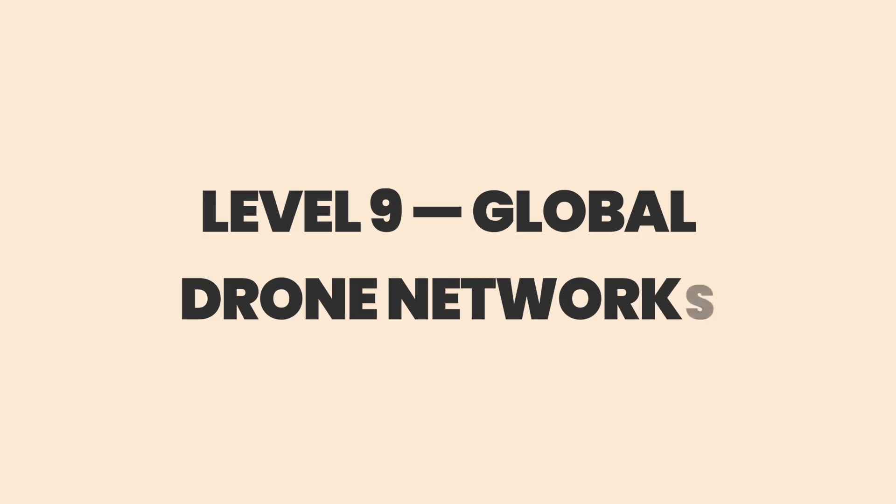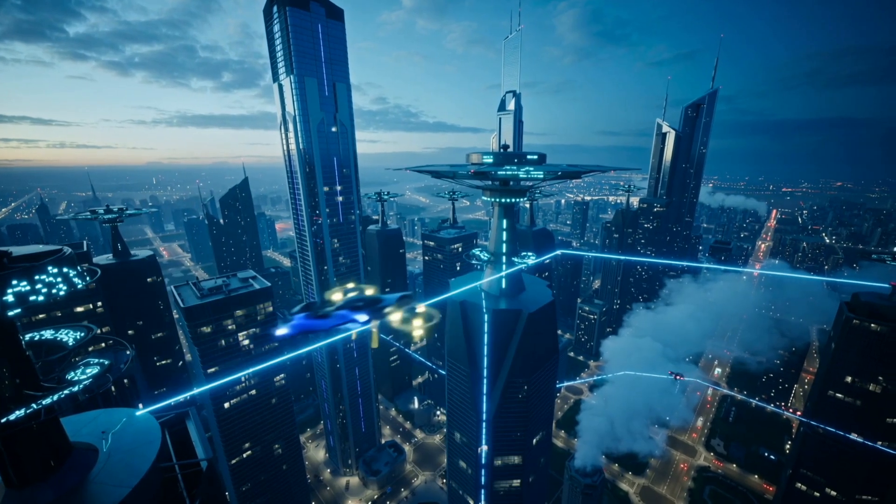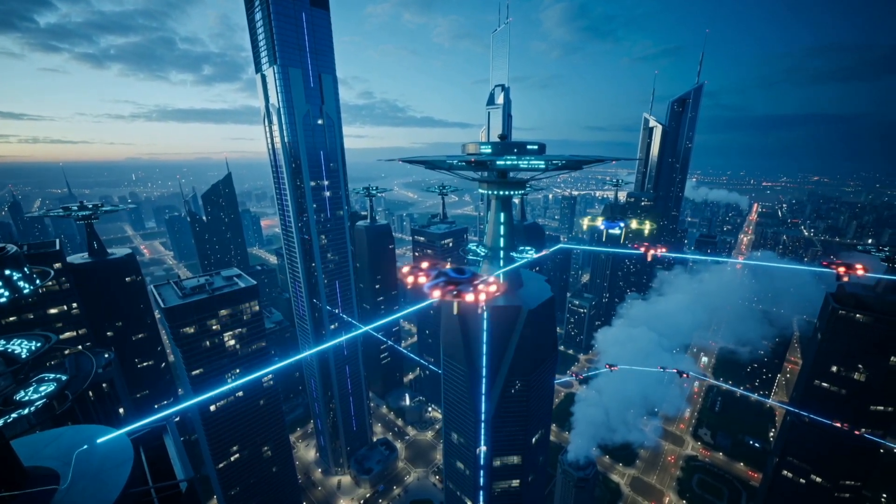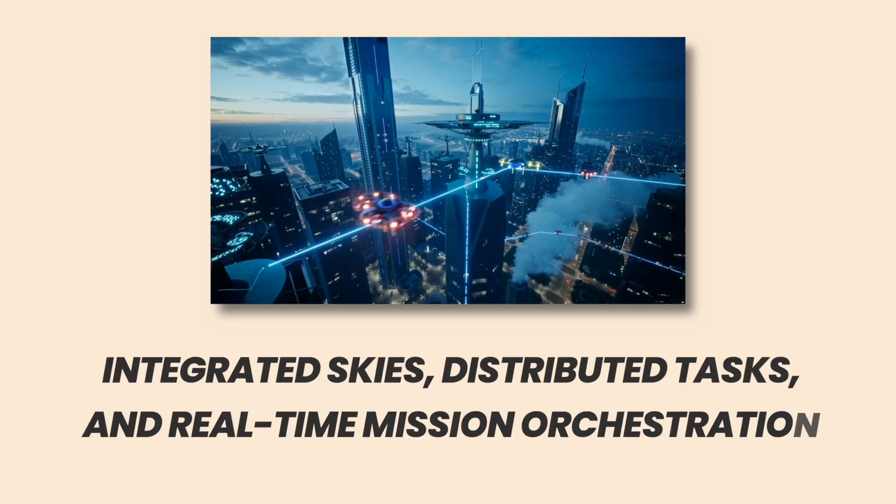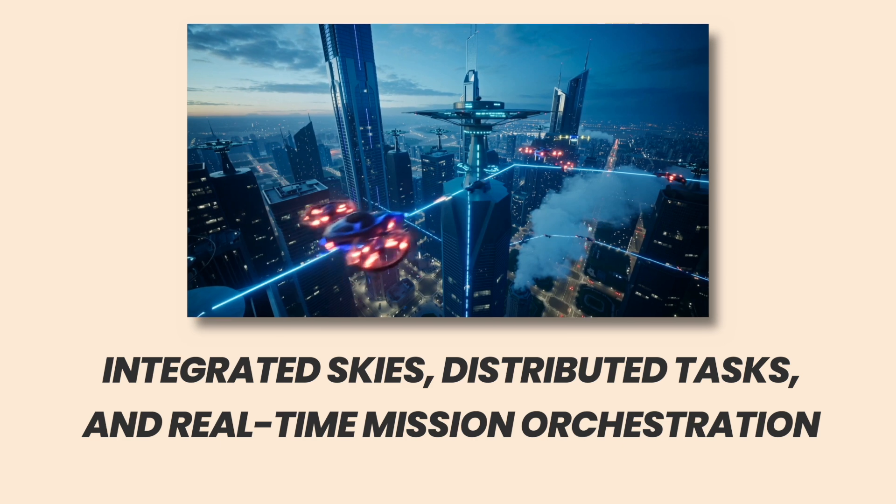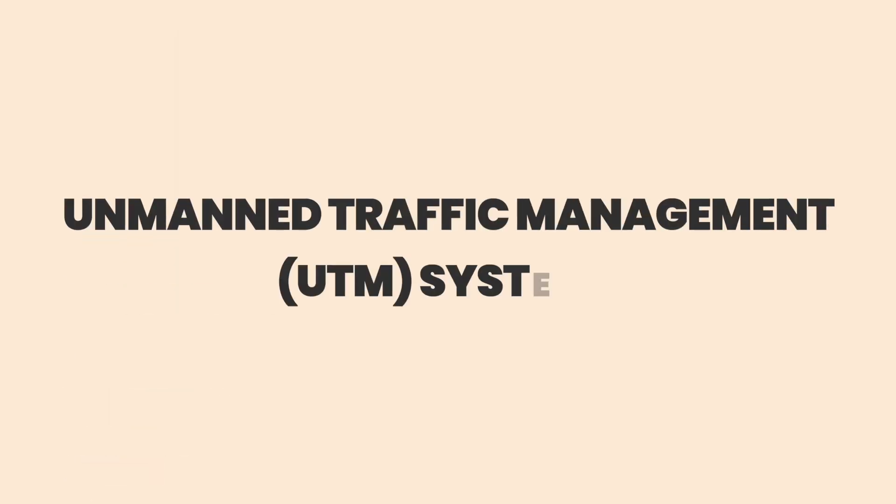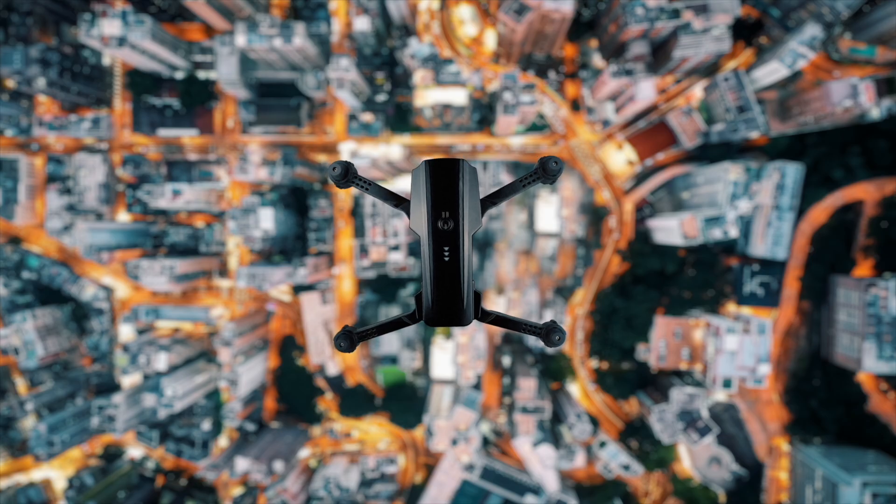Level 9. Global Drone Networks. Individual drones are useful. Fleets are transformational, but the real architecture is the network. Integrated skies, distributed tasks, and real-time mission orchestration. Enter Unmanned Traffic Management, UTM Systems, the air traffic control analog for low altitude autonomous aircraft.